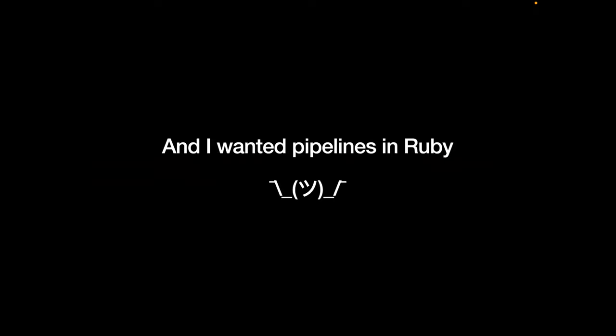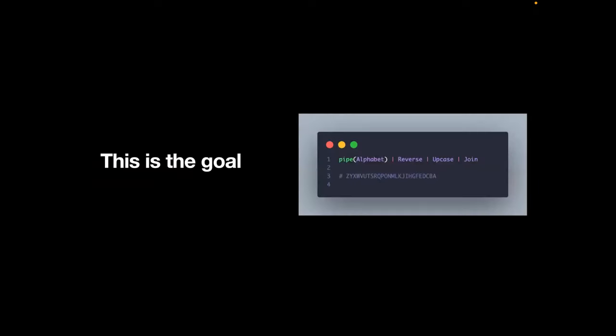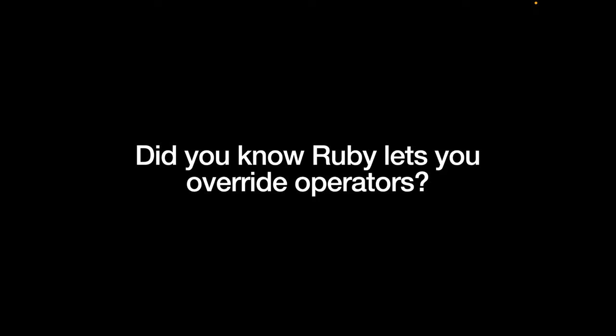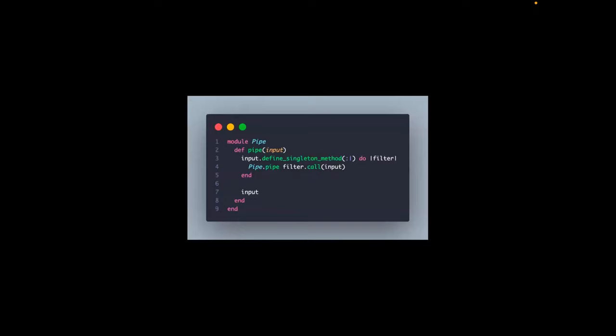The pipeline operator didn't make it into the Ruby spec — Matz had a different idea of how it should work than the rest of the community. But this is the goal: we want to pipe things into another thing and have it come out the other side, whereas normally this operator would do a bitwise OR. Ruby lets you override operators, so we can define a singleton method that overrides the pipe operator, take the filter, call some input on it from the right-hand side, and continually pipe that down the line.